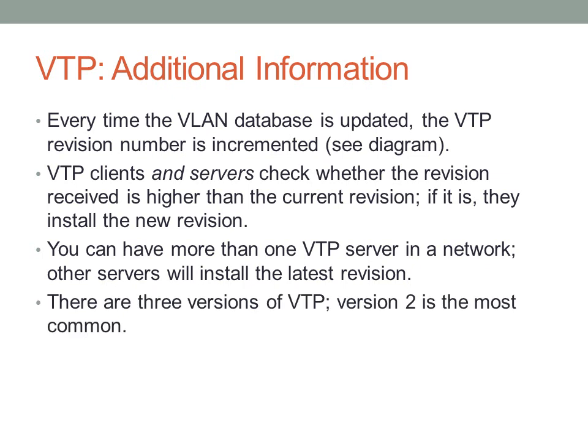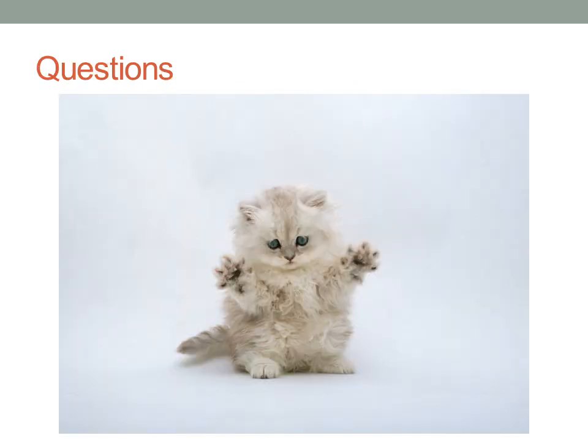There are three versions of VTP. Version 1 does not support any secure authentication. Version 2 supports some basic authentication and is the most common version. There is a version 3 that runs on higher-level switches that you will probably never encounter. This ends the presentation on VLANs and VTP. I encourage you to review this presentation and the corresponding textbook chapters. If you have any questions, please leave comments, feel free to rate this video, and I'll see you in the next presentation.